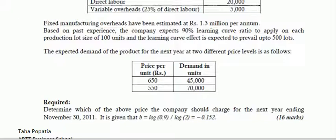The requirement is to determine which price the company should charge for the next year ending 30th November 2011. Since the core purpose is to maximize profits, if higher profit is earned at Rs. 650, that price is chosen; otherwise Rs. 550 is chosen. To make this decision, two profit and loss accounts will be prepared — one for 45,000 units at Rs. 650 and another for 70,000 units at Rs. 550 — and the option with higher profit will be selected.